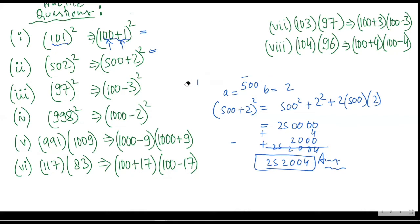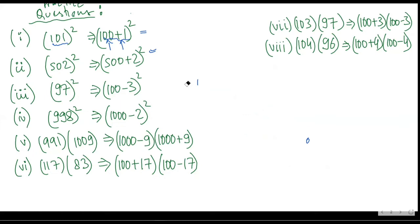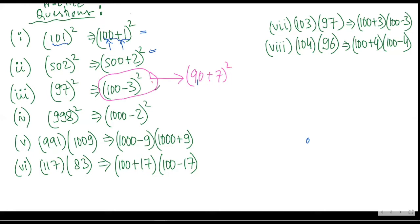This is how we use the identity of (a + b)². The second identity is (a - b)² is equal to a² + b² - 2ab. For example, if I have 97², I can write this as (100 - 3)². If I write this as (100 - 3)², my a would be 100 and b would be 3.